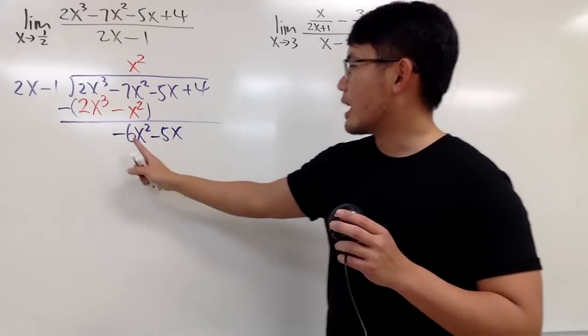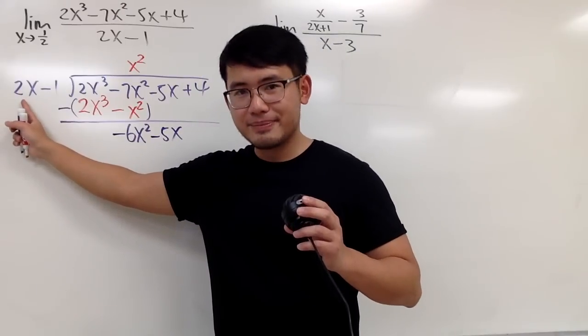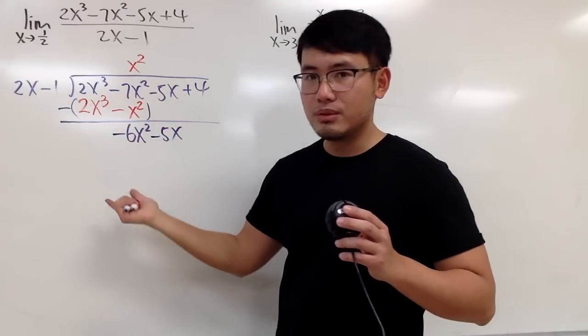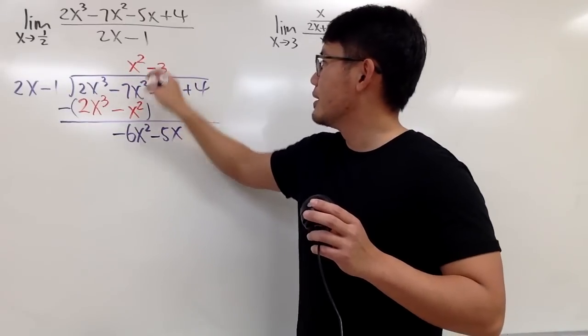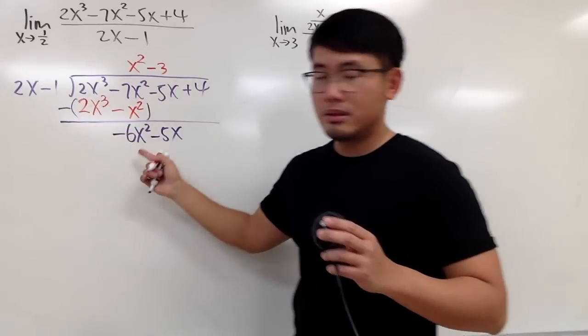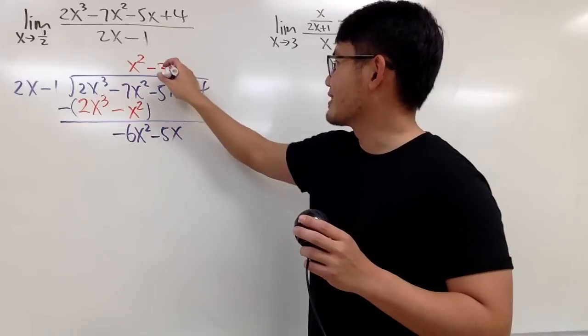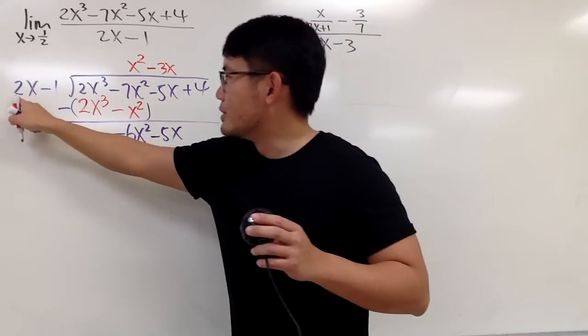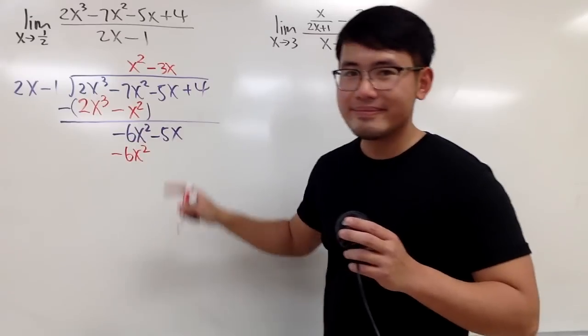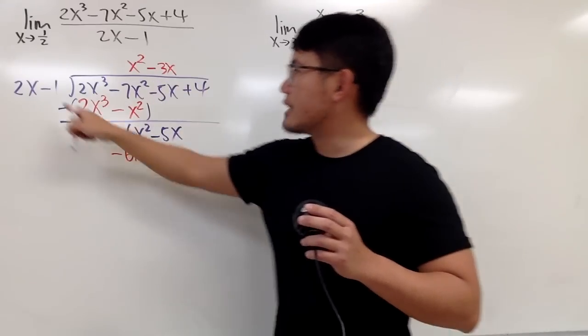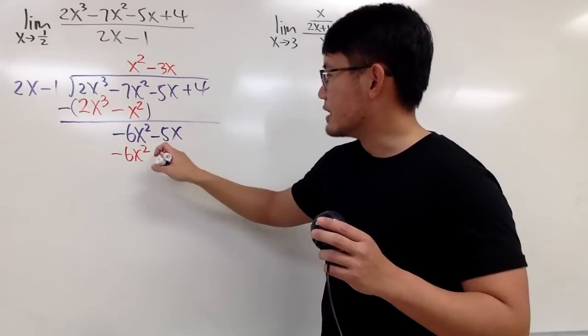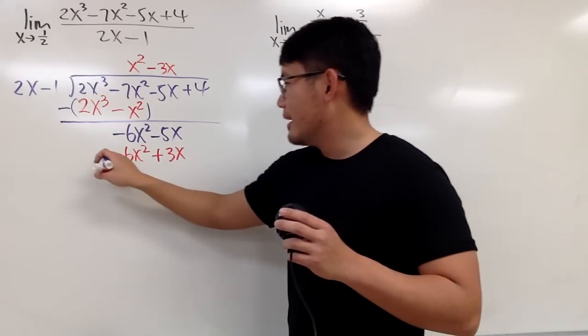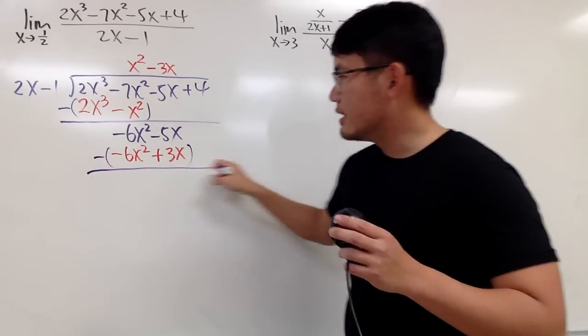And this time, compare this and that. What do we need? What times 2 is negative 6? That's negative 3, right? And then what times x will give us x²? I just need an x. So, you take negative 3x times 2x, we end up negative 6x². And then, negative 3x times negative 1 give us positive 3x, like this. And then, once again, subtract, you put the parentheses like this.